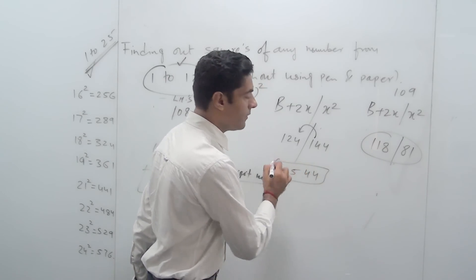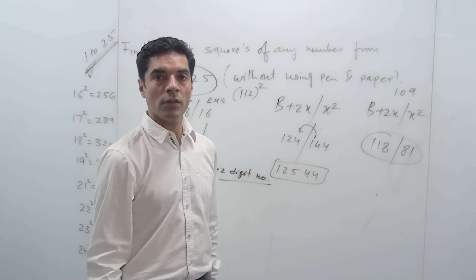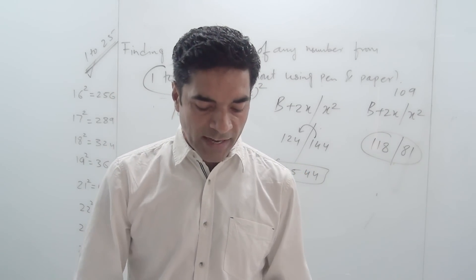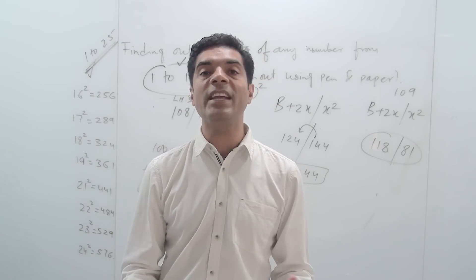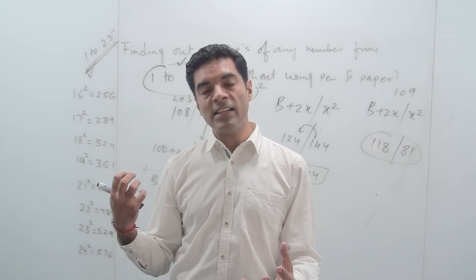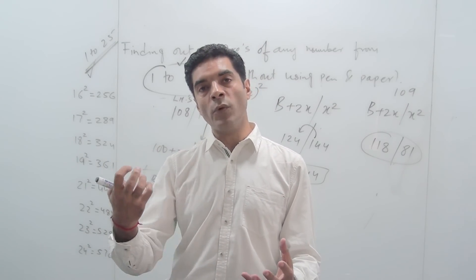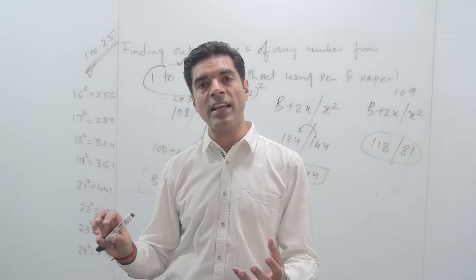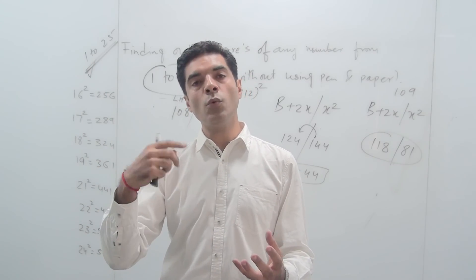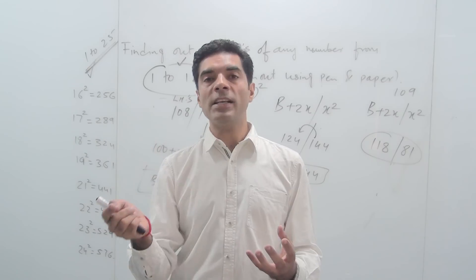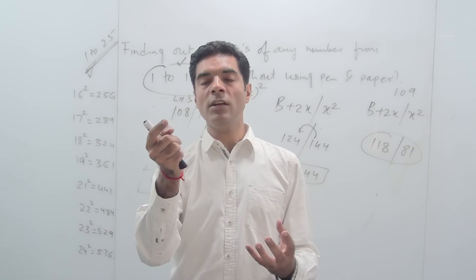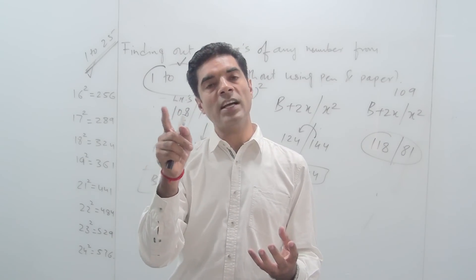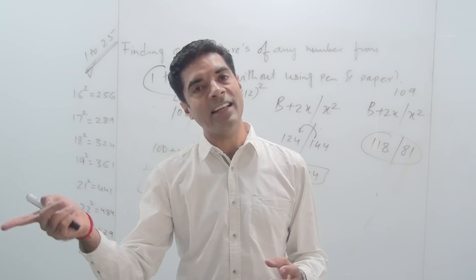If I wanted to find the square of 114, the right-hand side would be 14² = 196. Retain 96 and carry forward 1. 14×2 is 28, plus 1 carry forward is 29, plus 100 is 129. So the answer would be 12996.